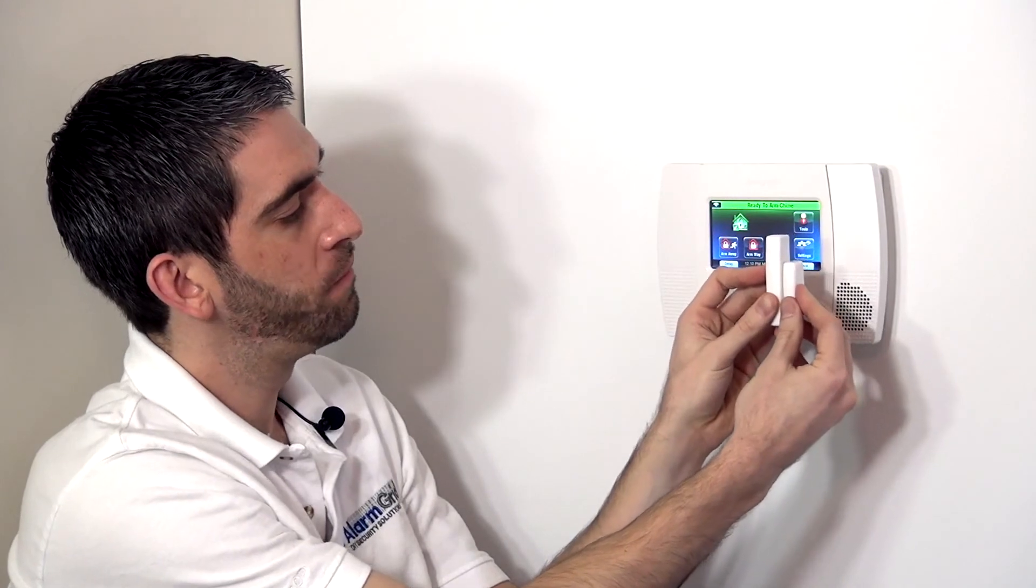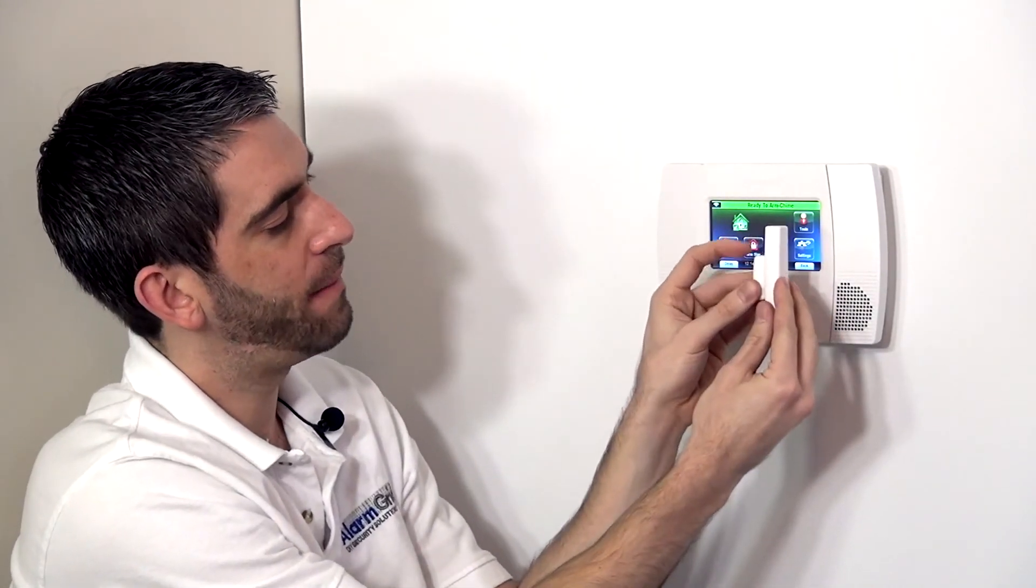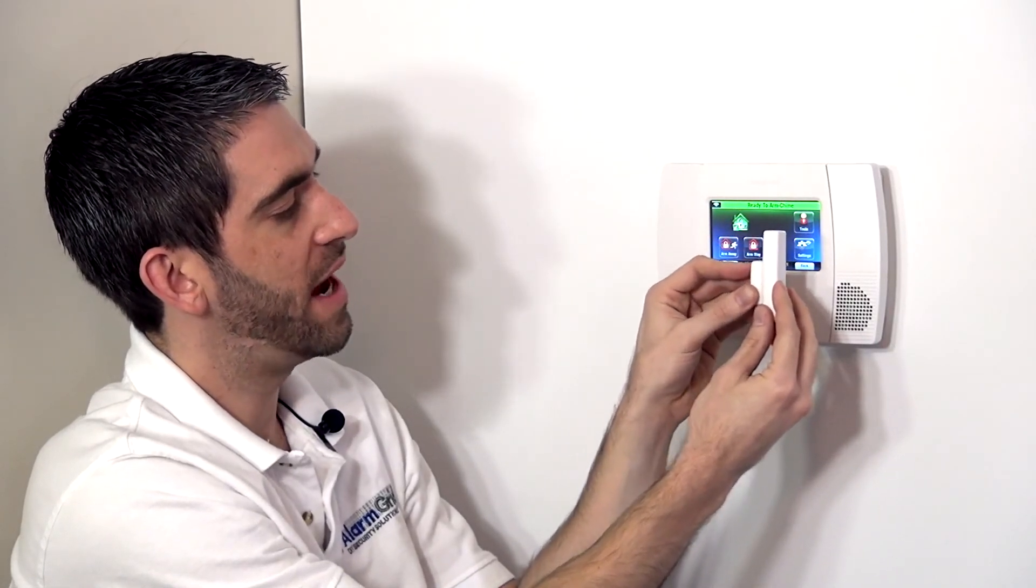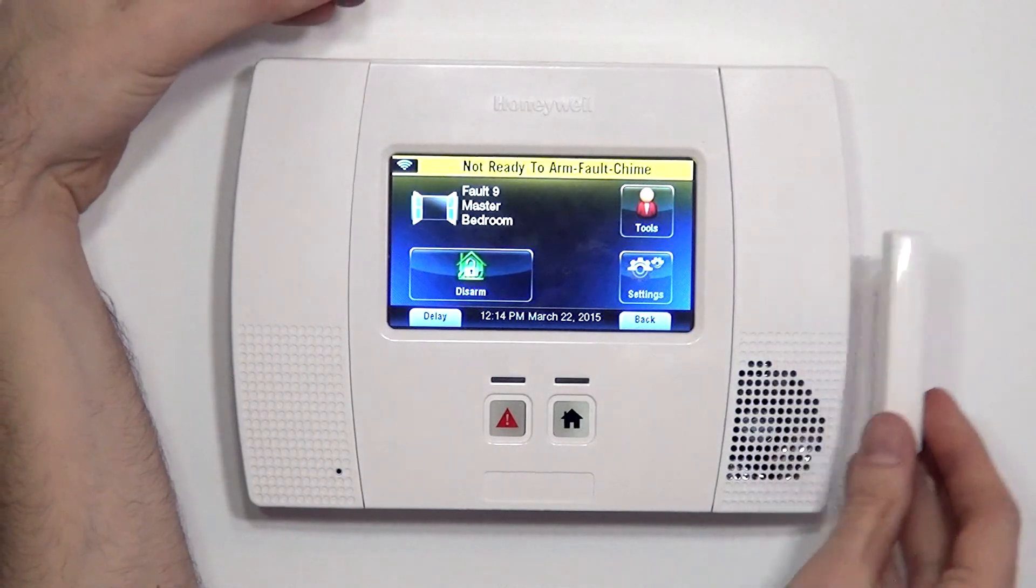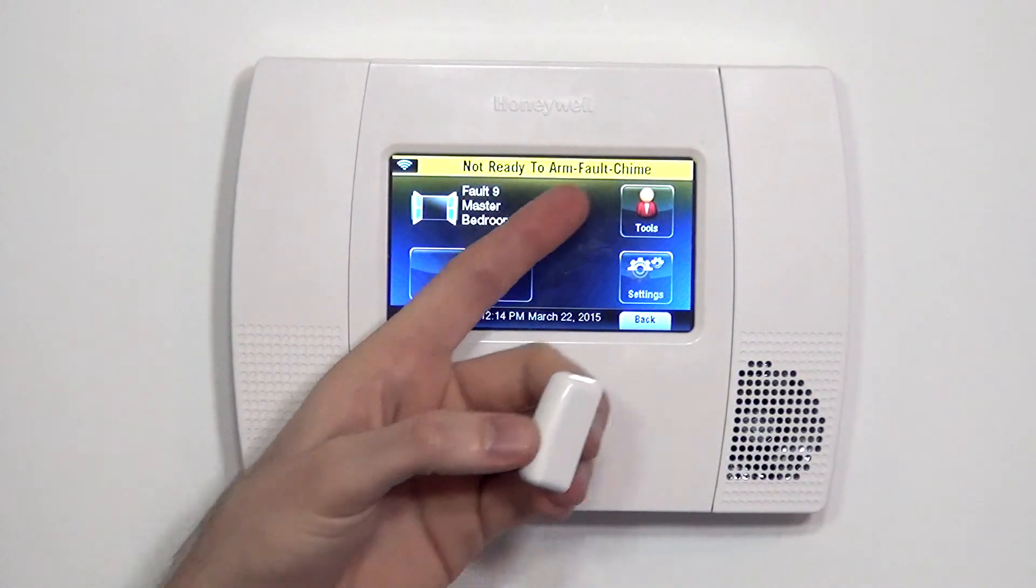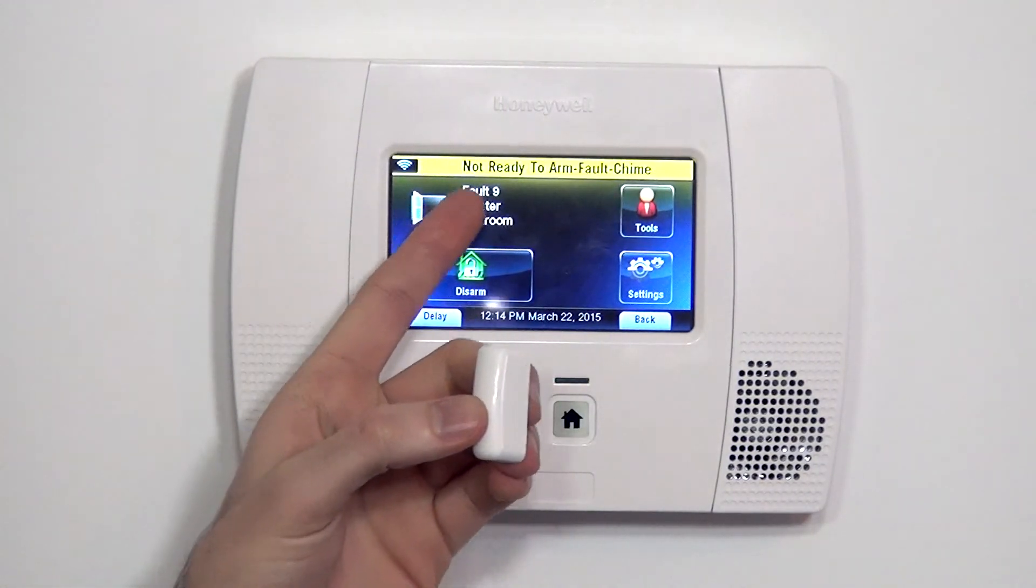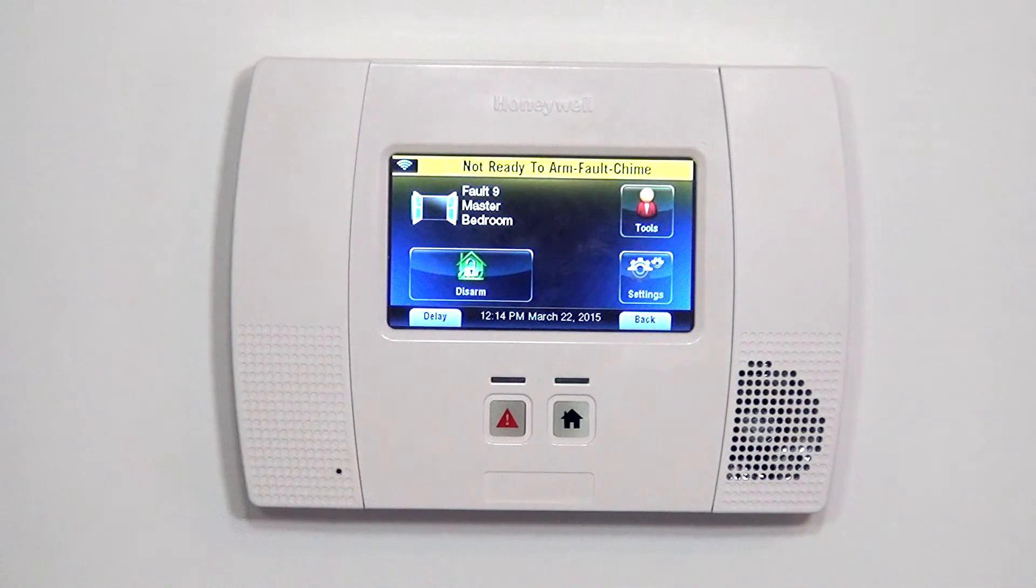We have it on our window. Typically, you would have the sensor on the frame and the magnet on the movable window portion. So we slide our window up and you can see the panel beep, beep, beep chimed. It also spoke master bedroom window and showed us this visual fault indication that the window's open.